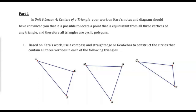In Unit 6, Lesson 4, Centers of a Triangle, your work on Kara's notes and diagrams should have convinced you that it is possible to locate a point that is equidistant from all three vertices of any triangle, and therefore all triangles are cyclic polygons. Based on Kara's work, use a compass and straightedge or GeoGebra to construct the circles that contain all three vertices in each of the following triangles.